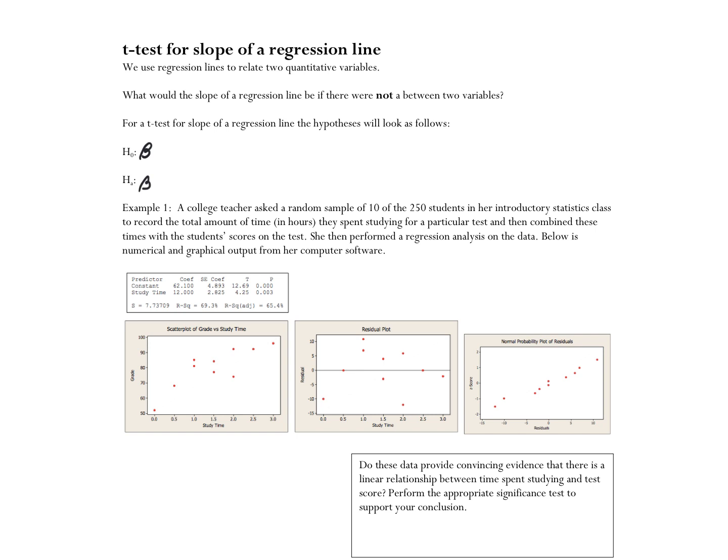The slope of a regression line, if there's no relationship between the two variables - this would be a zero correlation, no correlation between the variables. If I think about the line of best fit to go through that particular graph, it might be this horizontal line. And noticing that the slope of that line is zero. So my null hypothesis will always be beta equals zero. And then my alternative depends on whether I'm looking for a positive relationship, a negative relationship, or just is there a relationship.